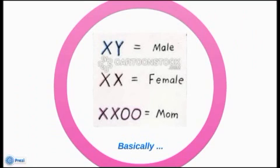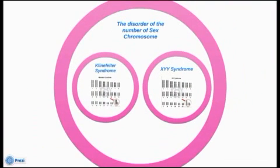Traits that are inherited via the Y chromosome are called holandric traits. No vital genes reside only in the Y chromosome, since roughly half of humans — the females — do not have a Y chromosome. Chromosome mutations are separated into disorders of number and disorders of structure, and can be found at the autosome and the sex chromosome.